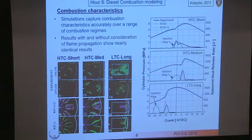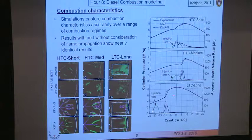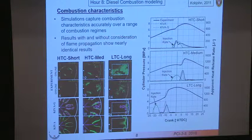The medium ignition delay case shows the injection rate and then combustion starting near the end of injection. In the long ignition delay case — the low temperature combustion — there's the injection, then a delay, and then combustion occurring. Even though the computational results are slightly different from the experiments, they're good enough to establish the trends.